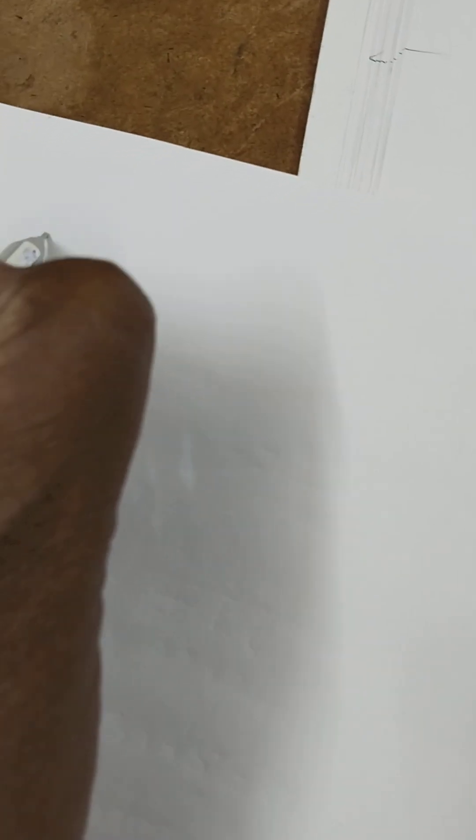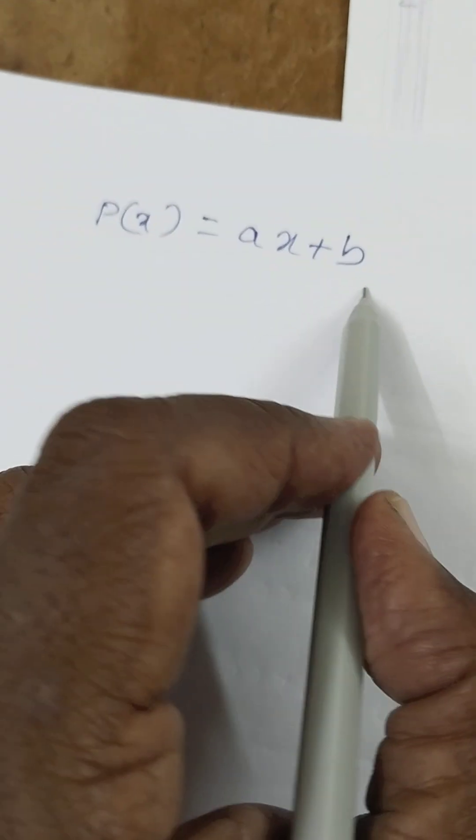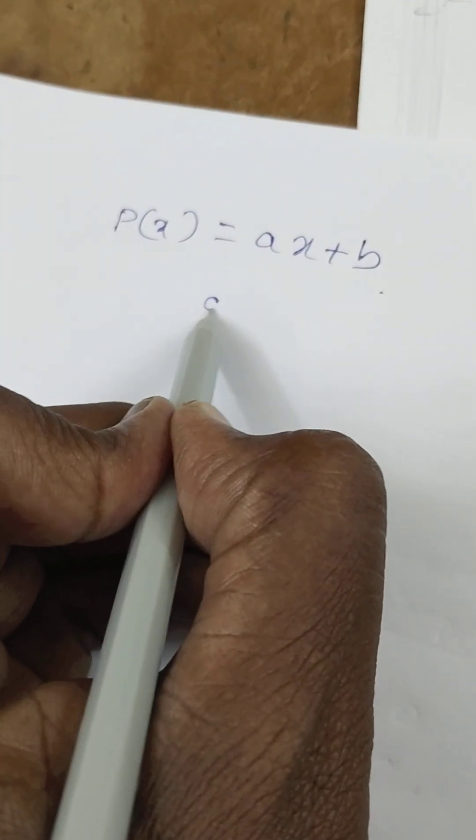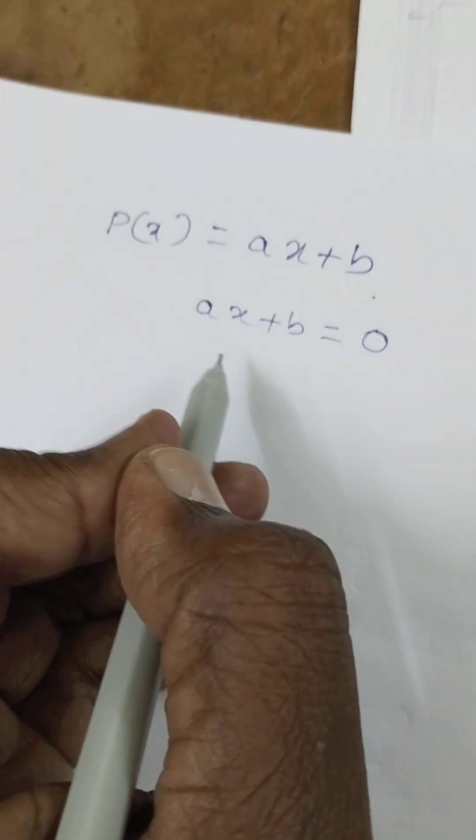For example, for a linear polynomial, p(x) is equal to ax plus b. This is called the linear polynomial. To find the value, we set ax plus b is equal to zero. This gives us the zero of the polynomial.